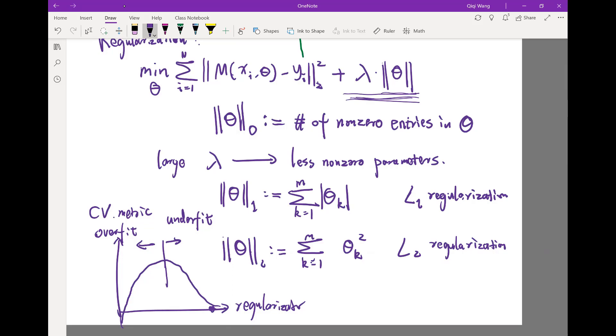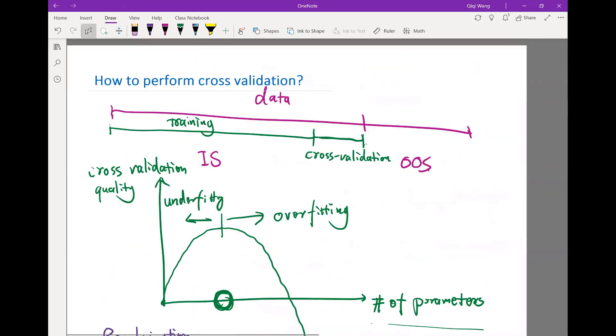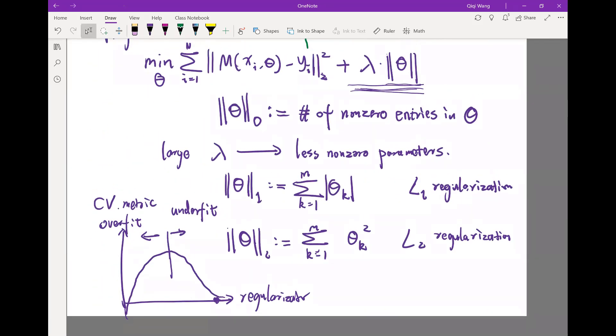So basically, you use the cross-validation procedure to figure out how much regularization you should use instead of how many parameters you can use. This is quite convenient because you don't have to change your model. You can have the same model but apply different strengths of regularization.